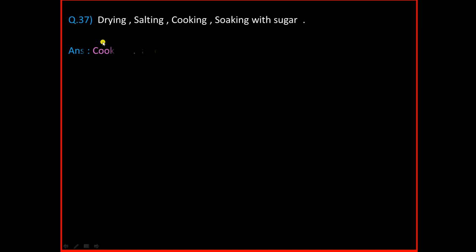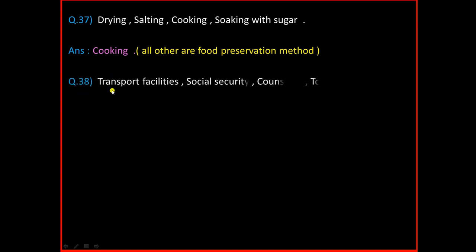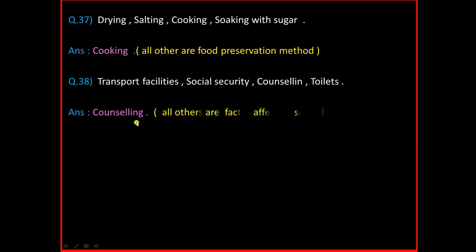Question Number 37: Drying, Salting, Cooking, Soaking with sugar. And the answer is Cooking. All others are food preservation methods. Question Number 38: Transport facility, Social security, Counselling, Toilets. And the answer is Counselling. All others are factors affecting social health.